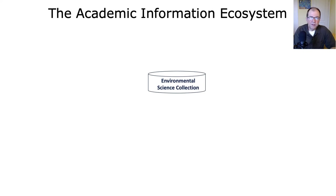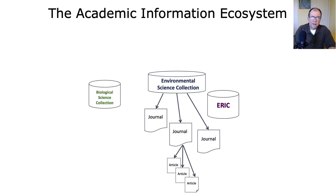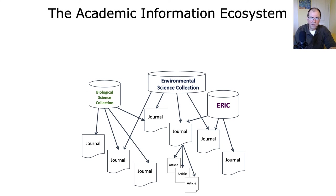Let's take a very specific database called the Environmental Science Collection. It provides access to individual journals, and those journals consist of a number of articles within their collection. Related to that are other databases that stand on their own — the Biological Science Collection and ERIC, which stands for the Educational Resources Information Clearinghouse. Those databases also provide access to particular journals. One journal can be shared across multiple databases, and some journals are shared amongst many databases while others are not.